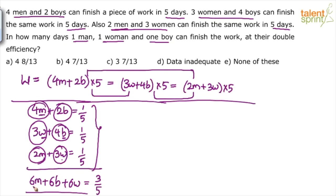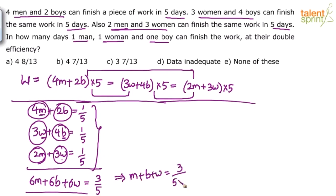The key insight is that the coefficient of each type of person is the same — 6 men, 6 boys, 6 women. So total capacity of 6 men + 6 boys + 6 women = 3/5. Therefore, capacity of 1 man + 1 woman + 1 boy = (3/5) ÷ 6 = 3/30 = 1/10. This means 1 man, 1 woman and 1 boy together take 10 days to finish the work at regular efficiency.